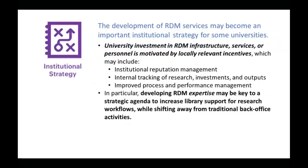The third incentive is institutional strategy. University investment in RDM infrastructure, services, and personnel is motivated by locally relevant incentives. While universities tend to share the view that RDM is important, the mix of incentives can vary widely. Some might respond mainly to internal interests such as maximizing grant funding, enhancing research reputation, or building distinctive capacities. Others could be driven by more external motivations like policy mandates. All these things play a role to some degree in university decision making about RDM.